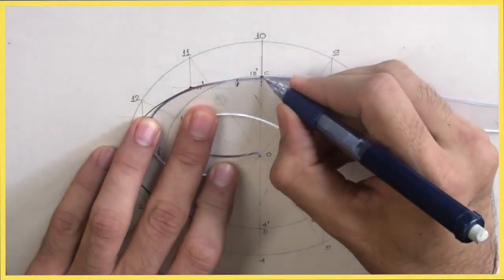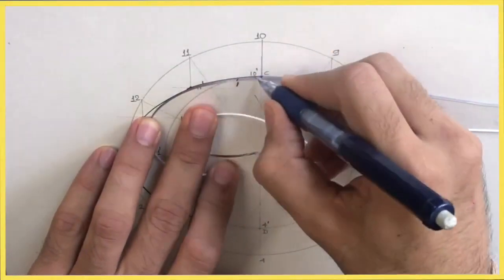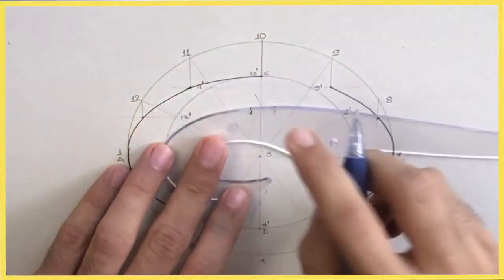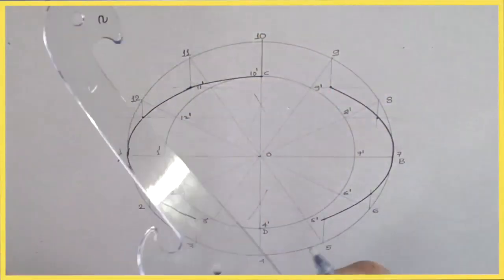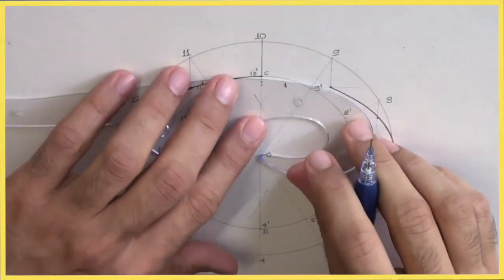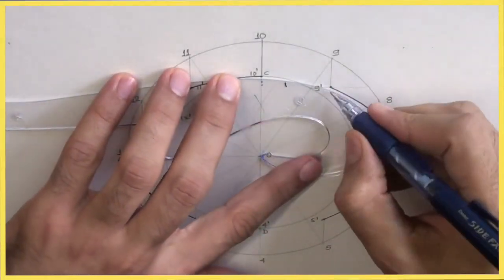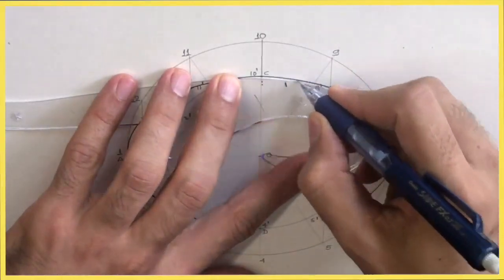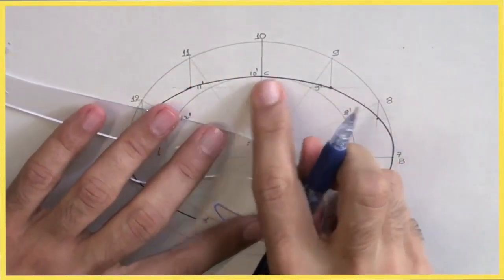Once you do that, you do the marking and you draw this curve. See, the first curve is important. Once you get the first curve, then you flip it. You draw the other curve. And it will be smooth.